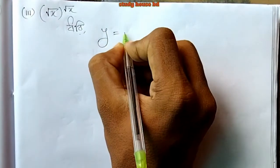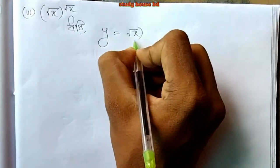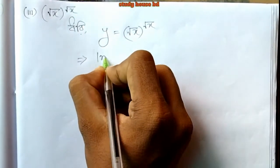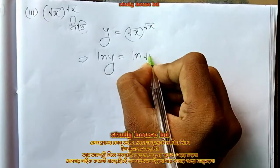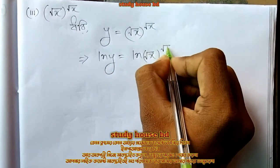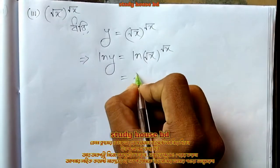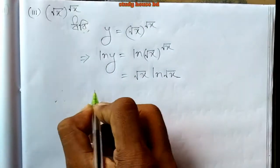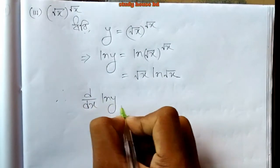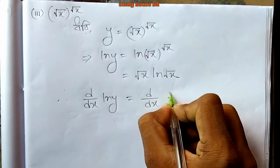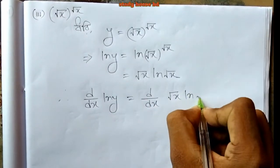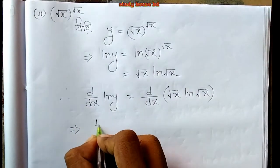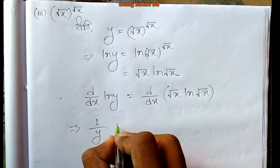Now the third problem: y equals (root x) to the power (root x). Taking the natural log of both sides: ln y equals root x times ln(root x). Now differentiating both sides: d/dx of ln y equals d/dx of root x times ln(root x).